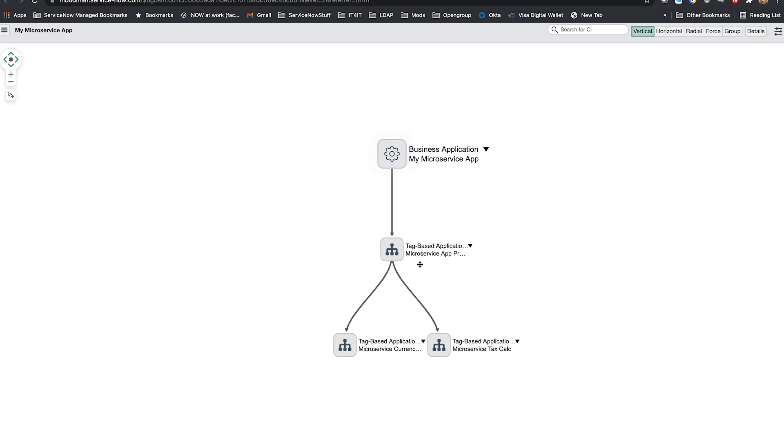So any of these application services goes down, the whole goes down and you've got traceability back to the business app. These of course would have underlying resources associated with them as the information comes in through a discovery source, all the tag based resources that come in from your cloud provider would be associated to the respective microservice.